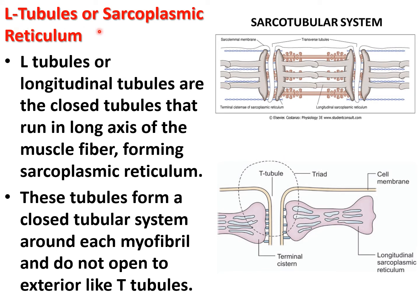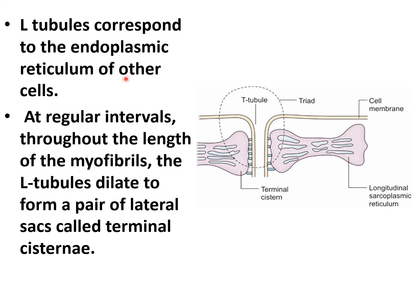L-tubules, or longitudinal tubules, are closed tubules that run along the long axis of the muscle fiber. They form a closed tubular system around each myofibril and do not open to the exterior like T-tubules. L-tubules correspond to the endoplasmic reticulum of other cells, and at regular intervals throughout the length of myofibrils, the L-tubules dilate to form a pair of lateral sacs called terminal cisternae.